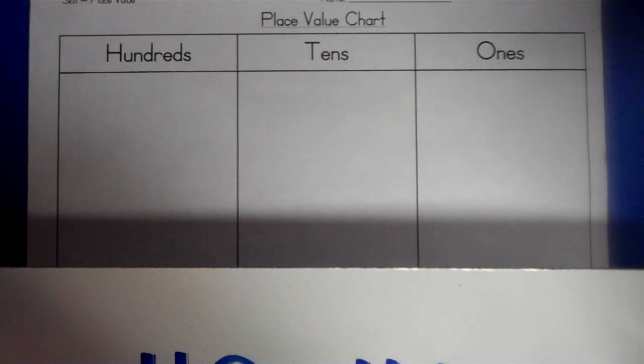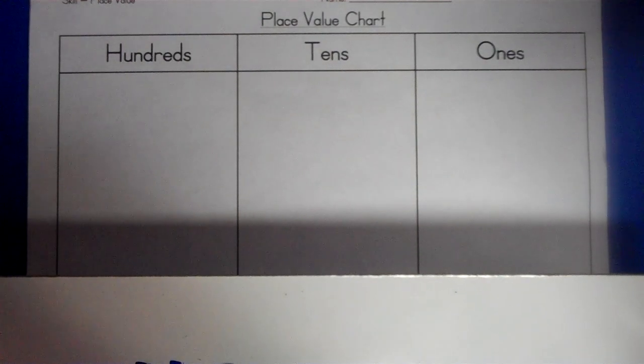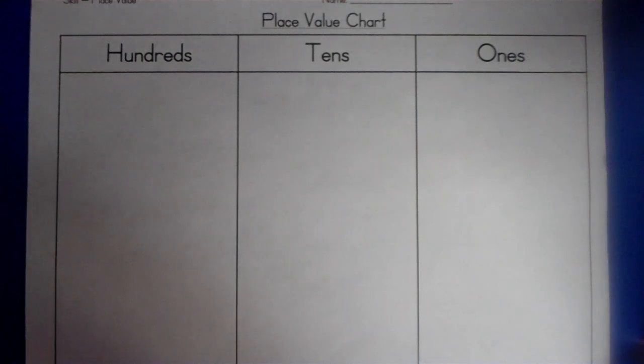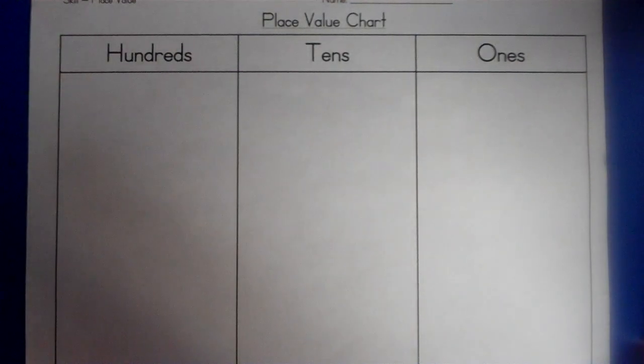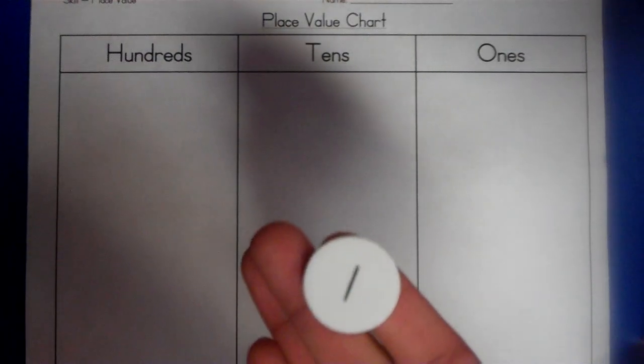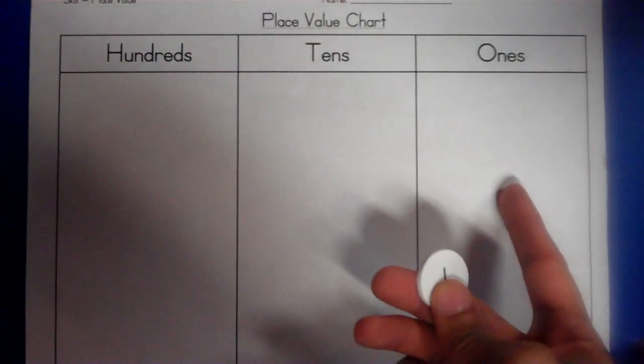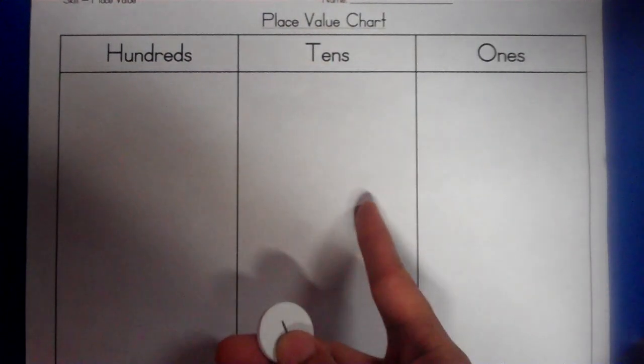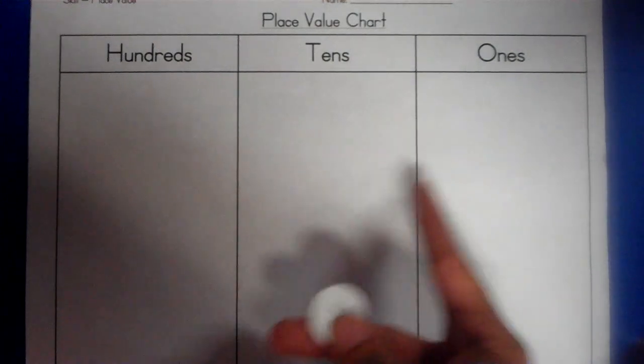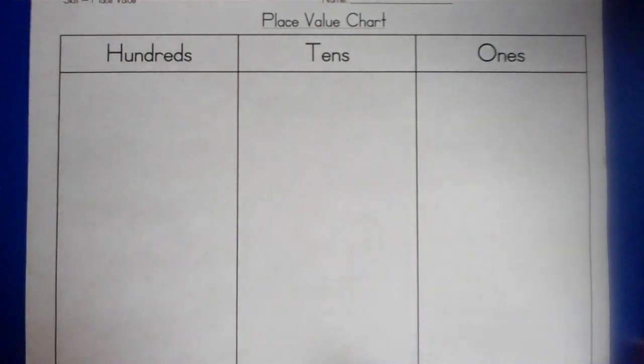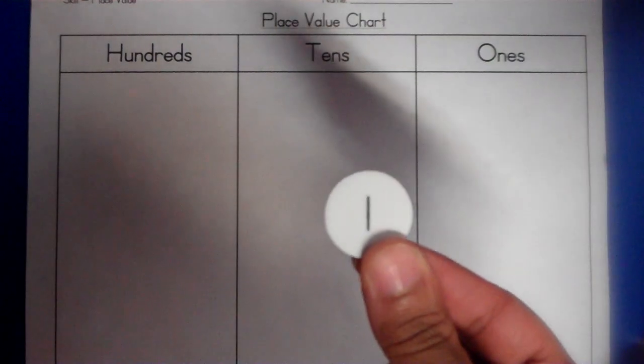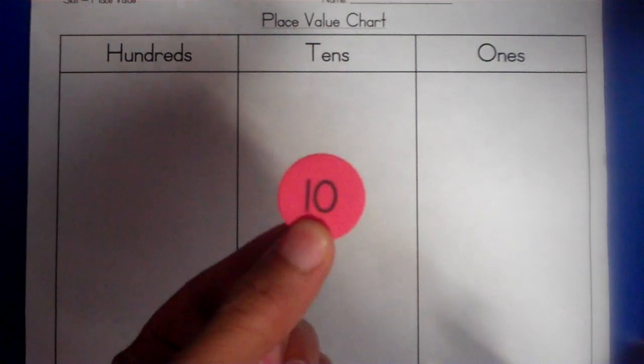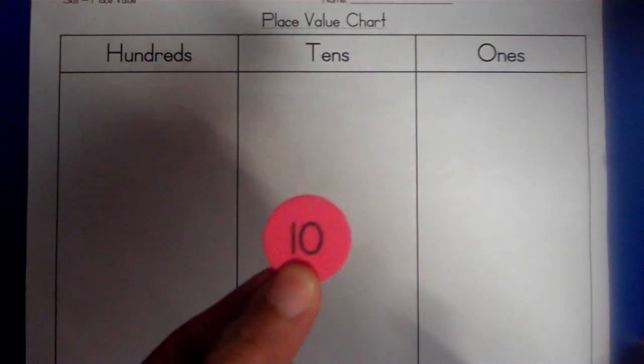We're going to be doing it using number chips today. Number chips are simple disks that we use to show how many of a place that we have. We call this the ones place, we call this the tens place, and we're going to use the ones and the tens to model what we are doing. This chip will represent one 1 and this chip will represent one 10.